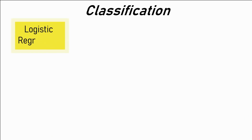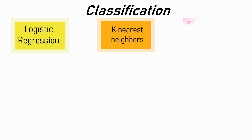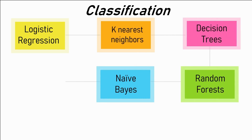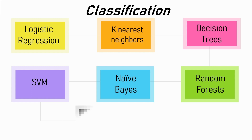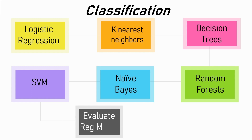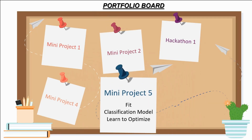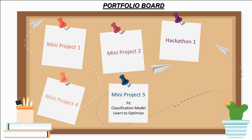Next in machine learning comes classification algorithms. These include logistic regression, K-nearest neighbors, decision trees, random forest, naive Bayes, and support vector machines. Also learn to evaluate the goodness of a classification model, then learn to fit those models in Python. Like we did for regression, make a small project where you fit a classification model on a dataset — this will be project number five.